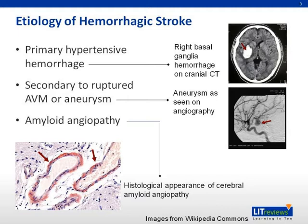We will now discuss the etiology of hemorrhagic stroke. In primary hypertensive intracerebral hemorrhage, uncontrolled hypertension leads to weakening of arterial walls causing Charcot-Bouchard aneurysms, which are prone to rupture, causing intracerebral hemorrhage. The most common site is the basal ganglia due to involvement of the lenticulostriate branches of the middle cerebral artery.